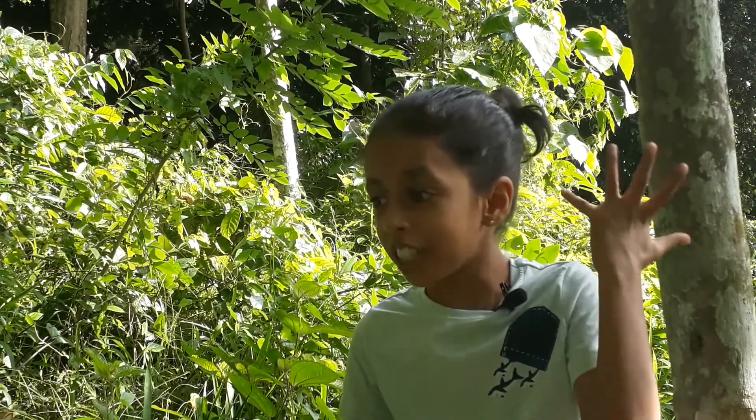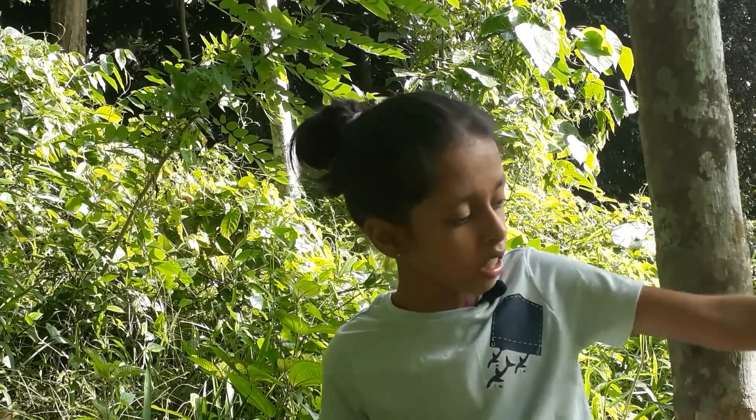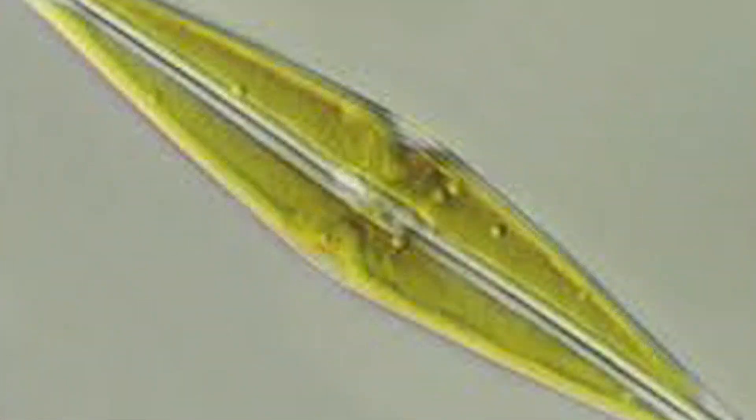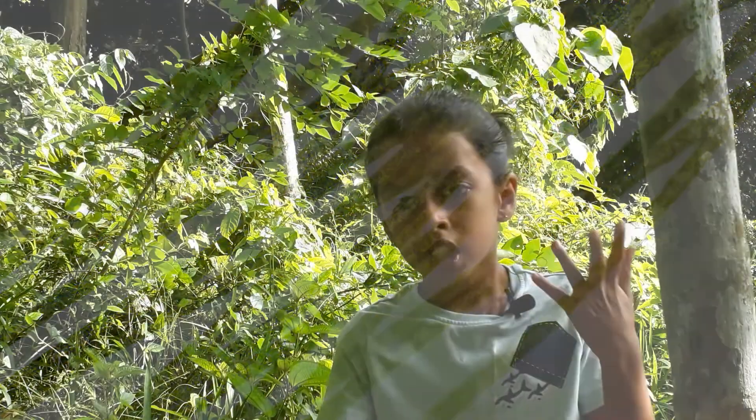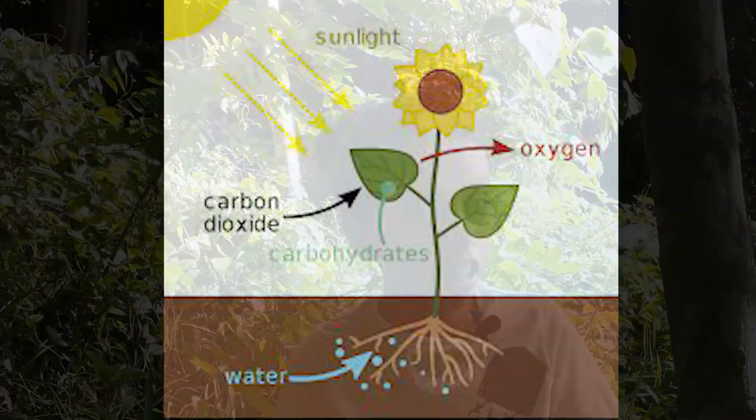How do phytoplankton produce their food? First, they take in sunlight just like any other normal plant. Then they use their single-celled chloroplast, which produces sugar and oxygen at the same time. This process is called photosynthesis.